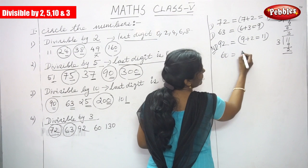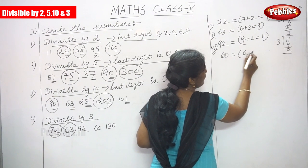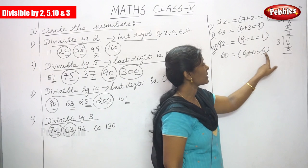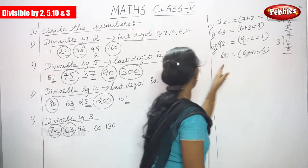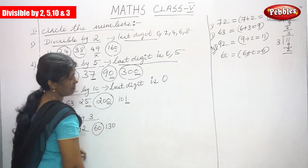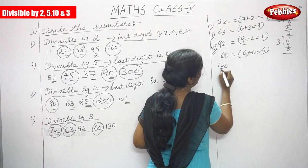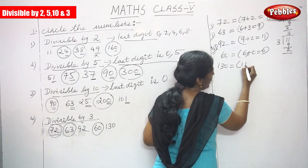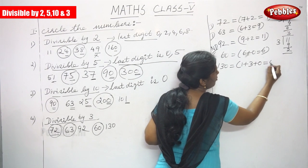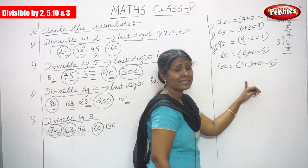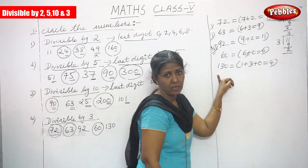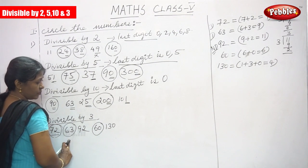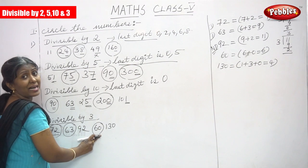Next is 60: 6 plus 0 equals 6. 6 is divisible by 3, so 60 is also divisible by 3. Circle 60. Next is 130: 1 plus 3 plus 0 equals 4. 4 is not divisible by 3, so 130 is also not divisible by 3. Do not circle the number. The numbers divisible by 3 are 72, 63, and 60.